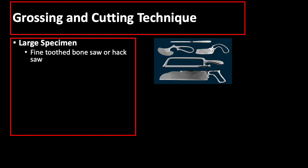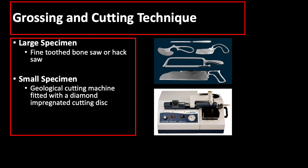Let us discuss the first step, which is selection of the tissue. For large specimens, a fine-toothed bone saw or hack saw should be used. While for small specimens, a geological cutting machine fitted with a diamond-impregnated cutting disc is used, and the target specimen thickness is 2 to 3 millimeters.